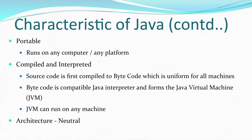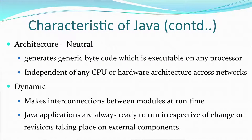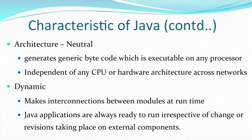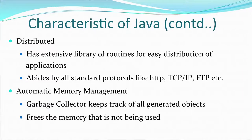Java is architecture neutral, meaning it can run on any platform, any computer, any CPU, any processor — because the Java Virtual Machine that is formed is architecture neutral. It generates generic byte code which is executable on any processor, independent of any CPU or hardware architecture across networks. Java is also dynamic — it makes interconnections with modules at runtime, not during compilation. Applications are always ready to run irrespective of changes or revisions, and interconnections with functions and applications can happen at runtime.